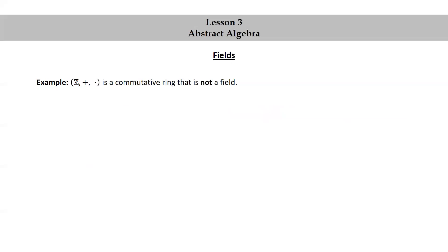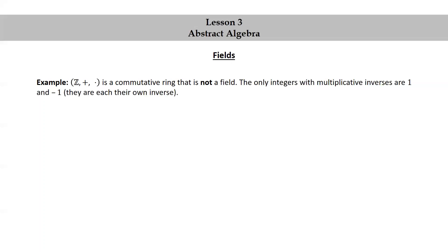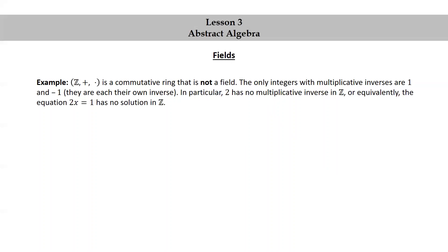The set of integers together with addition and multiplication is a commutative ring that is not a field. The only integers with multiplicative inverses are 1 and −1 — they are each their own inverse. In particular, 2 has no multiplicative inverse in Z, or equivalently, the equation 2X = 1 has no solution in Z.